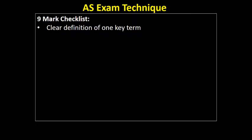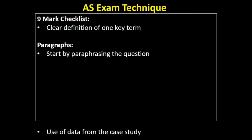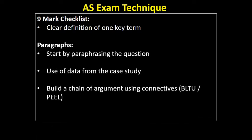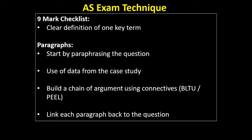Here's a quick checklist for answering a nine-mark question. Number one: start with a clear definition of one key term — don't start with 'there are many advantages and disadvantages of,' that won't pick up marks. For each paragraph: start by paraphrasing the question; use data from the case study to back up what you're saying; build a chain of argument using connectives — 'therefore,' 'this leads to,' 'because of' — whatever system you prefer. Finally, make sure your answer is focused on the question by linking back to it in the final sentence of each paragraph. Do that, and you should be well on your way to achieving nine marks, especially if you can do it twice.